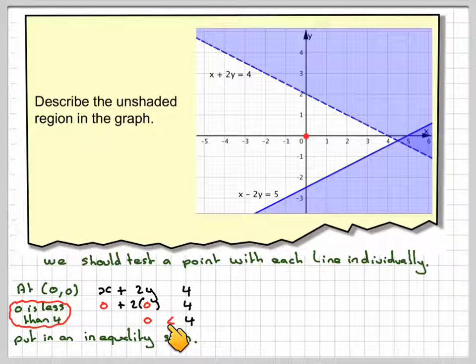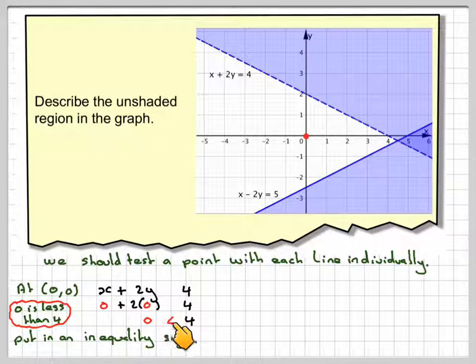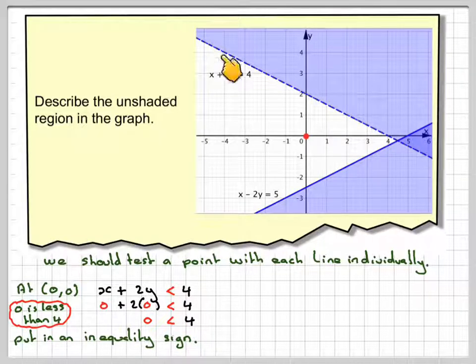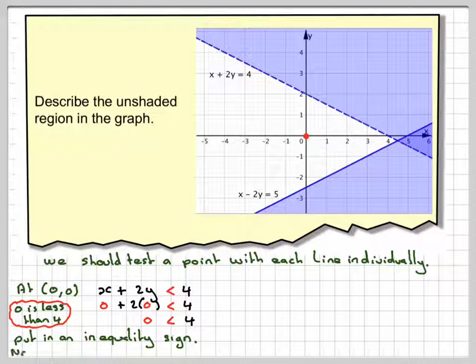So we're putting the sign with the point towards the 0 and the wide bit towards the 4. Now we notice this line is dashed therefore we will not need an equal sign on the inequality.